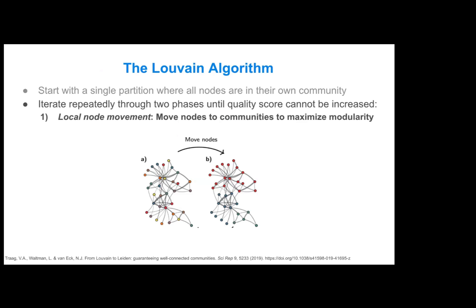The first phase is local node movement, where you move nodes to different communities to try to maximize modularity. For instance, in this step we're moving all of these nodes into three different communities, now represented by the red, blue, and green colors.